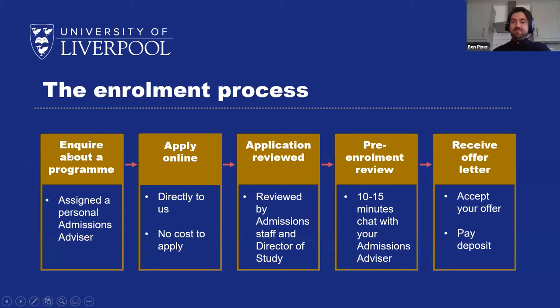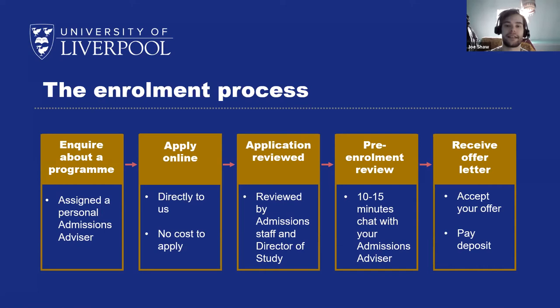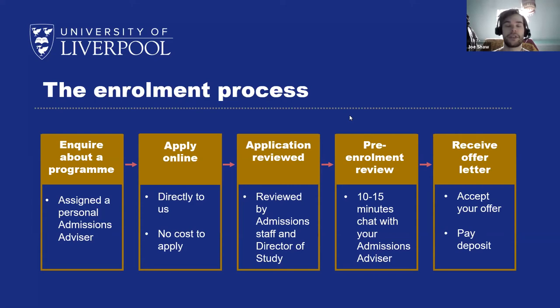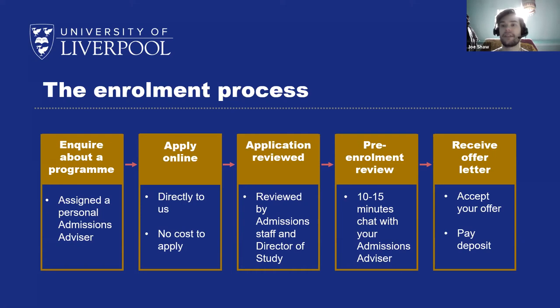I'll be handing over to Joe who will walk you through the enrollment process. Hi everyone — I'm going to talk through the admissions and enrollment processes for our online programs at the University of Liverpool. Starting at the beginning: if you want information or want to get in touch with the admissions team, you can give us a call, email our general line, use our live chat system, or complete an inquiry form on our online programs website. When you make an inquiry you will be assigned a personal admissions advisor who will work with you for each step of the process all the way until you enroll.